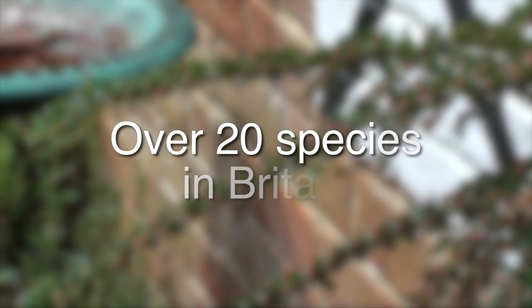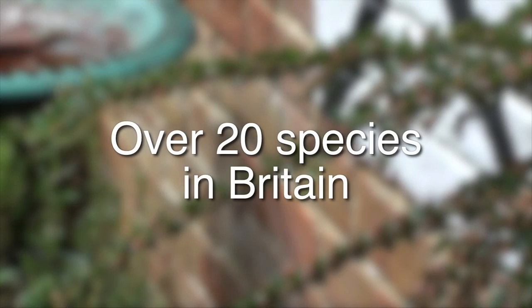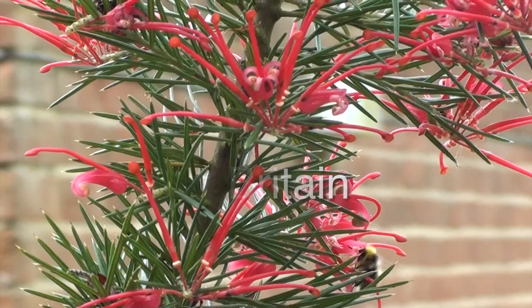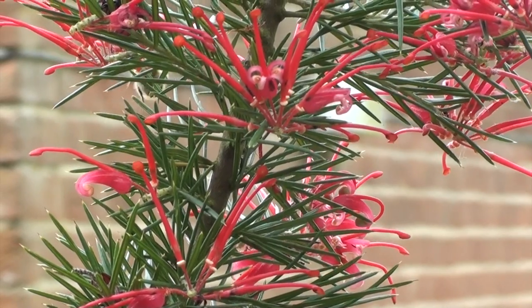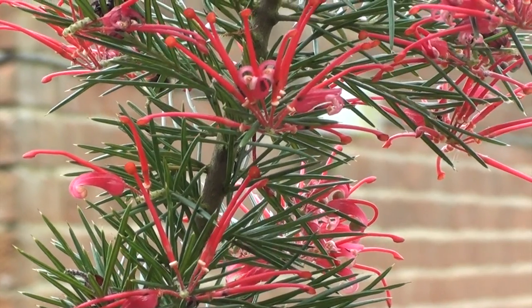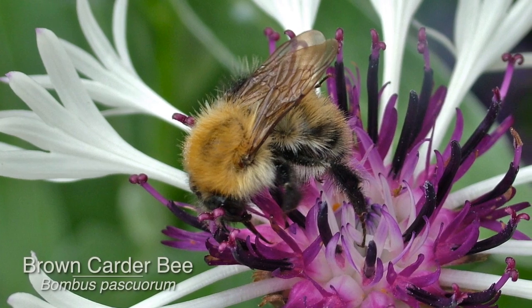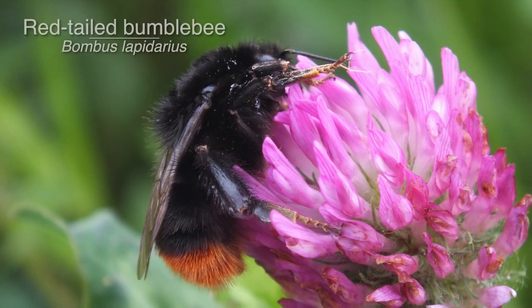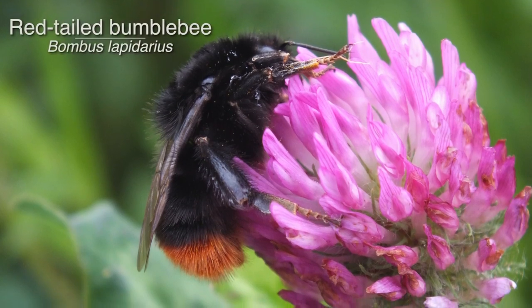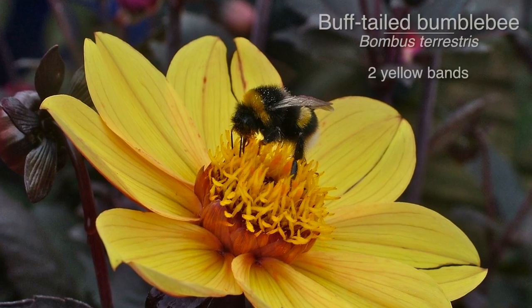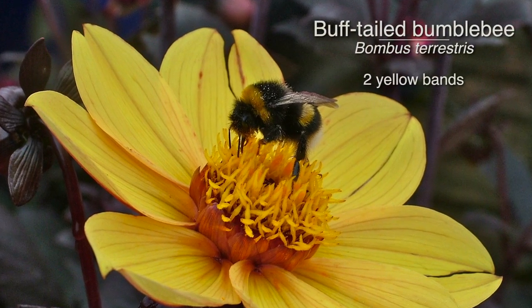There are over 20 species of bumblebees in Britain, so in terms of their colour, it is actually quite variable. Some of them are brown, some of them are black with a red abdomen, black and white stripes, and so on.